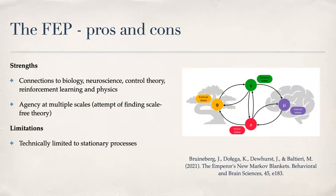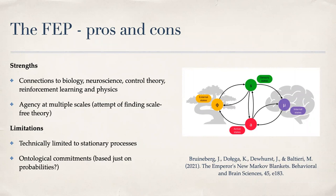The ontological commitments of this framework are very strong for what is, in my opinion, a very weak notion of separation between agent and environment — it's purely statistical and in the eye of the observer. Yet they claim they can find agents in arbitrary conditions, and I think that's not true. Also, because of the scale-free property, quantum systems and galaxies could be interpreted as agents under this framework.